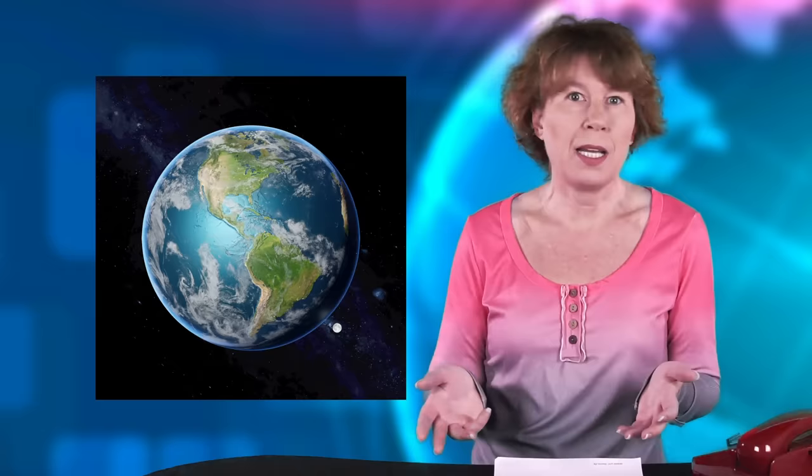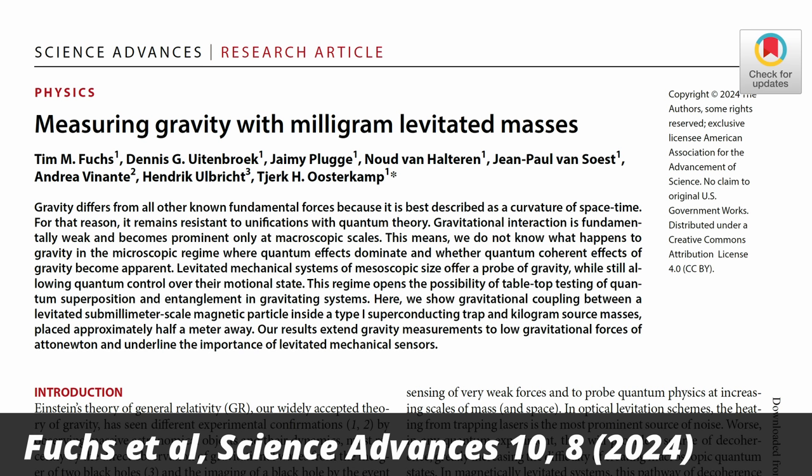If you take something heavy like a planet, then you can measure the gravitational field all right, but you can't measure its quantum properties. That's because normally quantum properties go away the larger the object, unless you treat them very, very carefully. And that's what they did in this experiment.